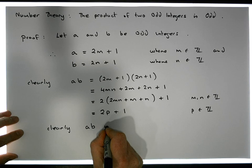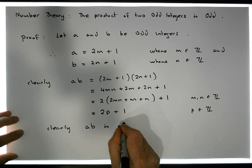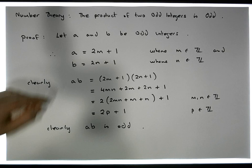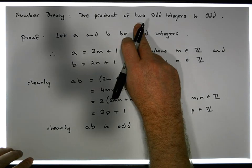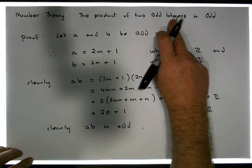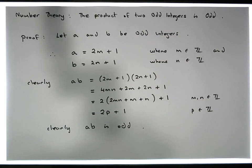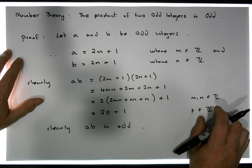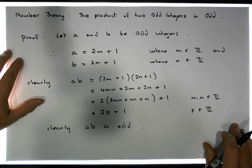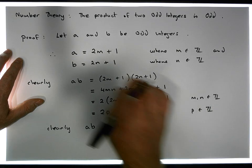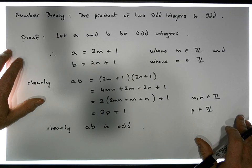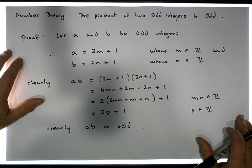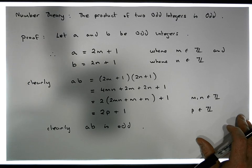So what we've shown with this proof is that the product of two odd integers is in fact odd. My name is Jonathan Lambert with the Mathematics Development and Support Service at the National College of Ireland. I hope this video on number theory was intuitive and helpful — thank you for watching.